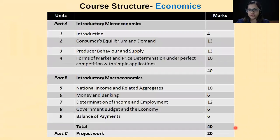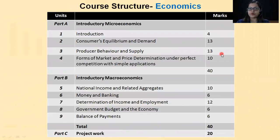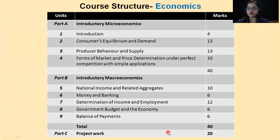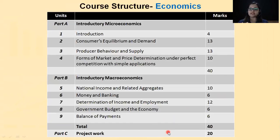Now let's come to Economics. In Economics we have two parts: Micro Economics and Macro Economics, plus Project Work. Theoretically, you have two books — Micro and Macro — each of 40 marks. Your Part C is Project Work of 20 marks. We can see that in all the main commerce subjects — Accountancy, Economics and Business Studies — we have Project Work. CBSE is giving equal weightage to learning, understanding, and making a practical project file.